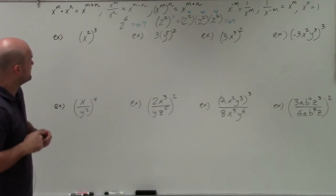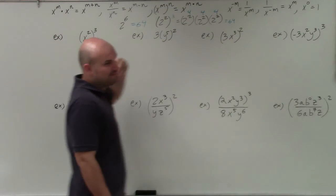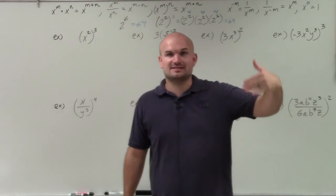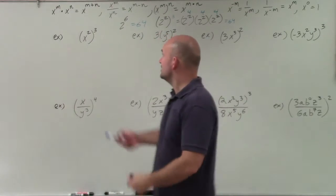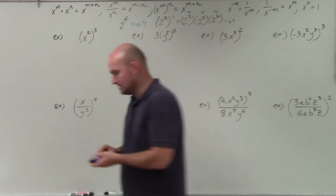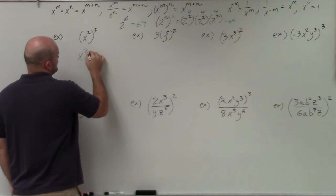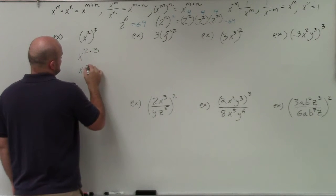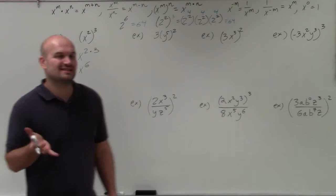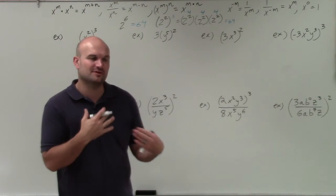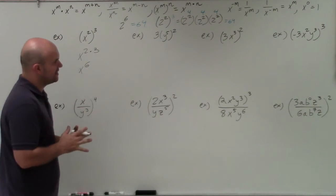To put it in simplified language, basically when we have an exponent raised to a power, we're just going to multiply those powers. So here I have x squared raised to the third — I'm basically just going to do x to the 2 times 3, which equals x to the sixth power. It's not the product rule — a lot of students get that confused and they add. Just remember the power rule is different than the product rule.